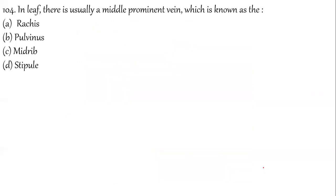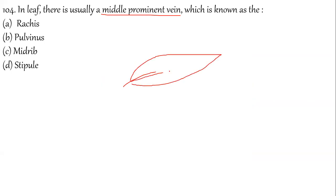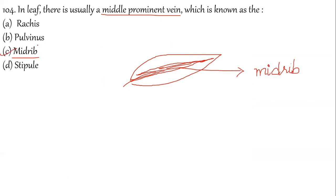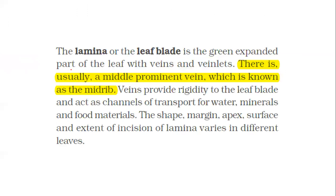Question 104: In a leaf there is usually a middle prominent vein. If you look at the center of a leaf, the middle prominent vein is called the midrib. The correct answer is option C — the midrib.